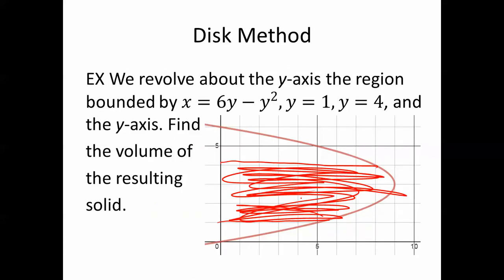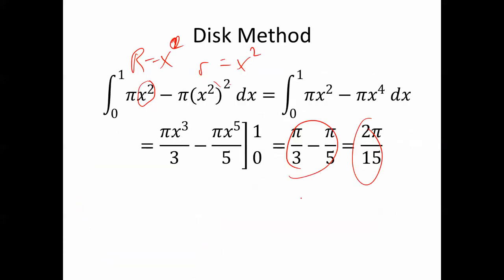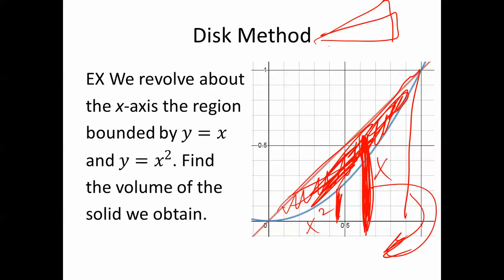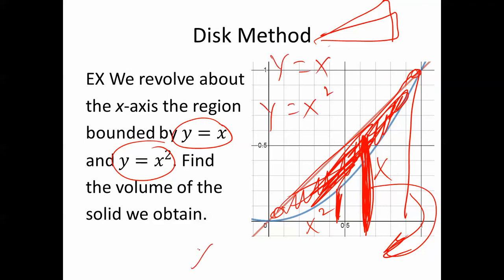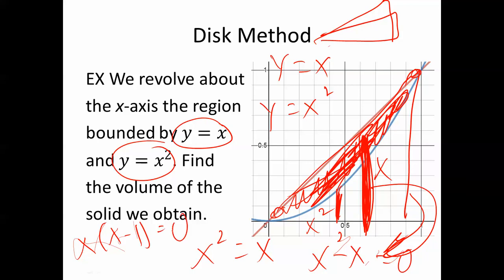In this particular problem the bounds were given. If they're not given, it gets a little more complicated, but you can do it — you just need to find where the curves intersect by solving as a system of equations. For y equals x and y equals x squared, that means x squared equals x. Getting everything on one side: x squared minus x equals 0, so x times x minus 1 equals 0. The solutions are x equals 0 or x equals 1.